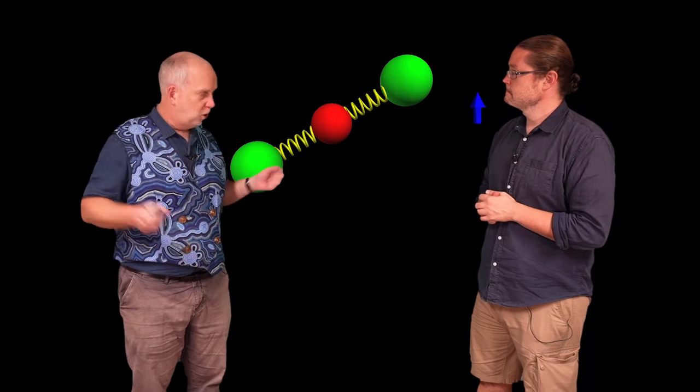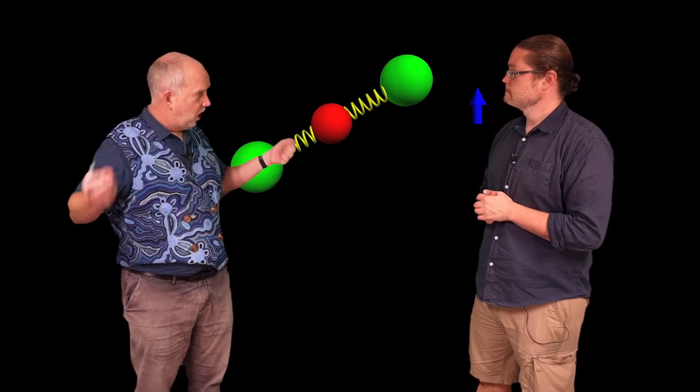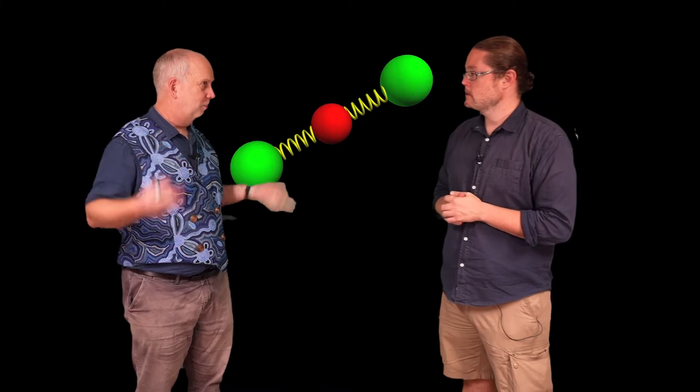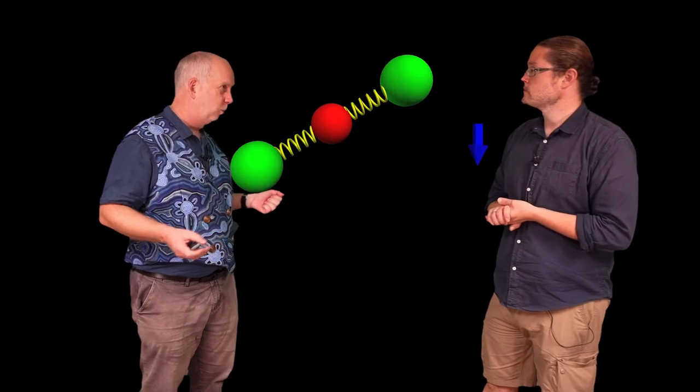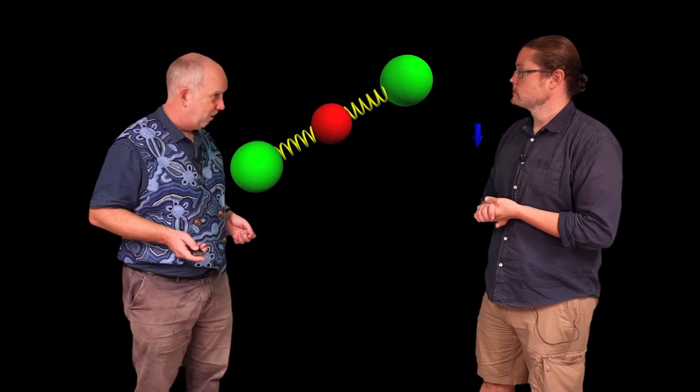And it's going to pull the carbon and the oxygen different ways. Because it's a polarized molecule that means there's electrical charge spread differently across these things. So when you apply electric field to it it's going to pull the carbon in one way and the oxygen in another.